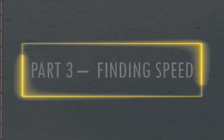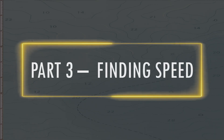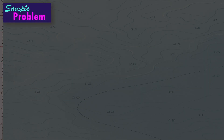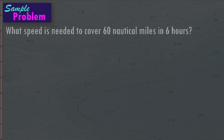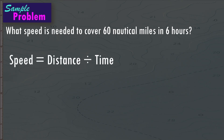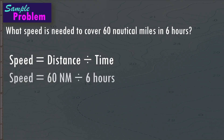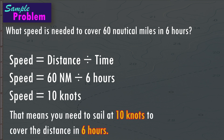Part three: finding speed. Sample problem — what speed is needed to cover 60 nautical miles in 6 hours? Speed equals distance divided by time. Speed equals 60 nautical miles divided by 6 hours. Speed equals 10 knots. That means you need to sail at 10 knots to cover the distance in 6 hours.